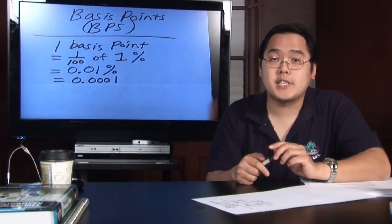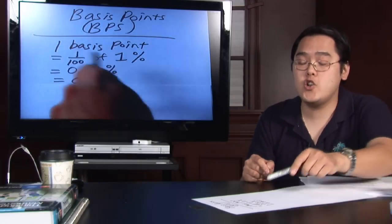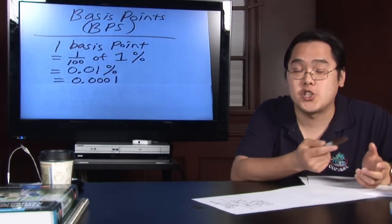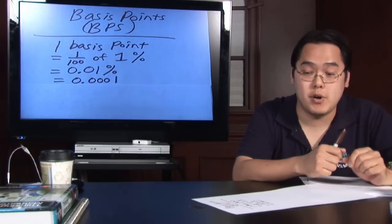One basis point is a very small number. By definition, it is one one hundredth of 1%. We know 1% is small enough as it is, but one one hundredth of that is even smaller.